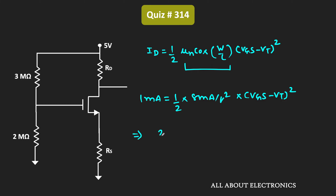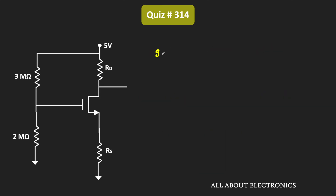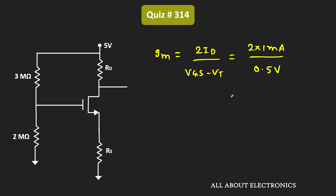Solving, 1/4 = (VGS − VT)², so VGS − VT = 0.5 V. Now we can find the transconductance: gm = 2·ID / (VGS − VT) = 2 × 1 mA / 0.5 V = 4 millisiemens. So the transconductance at the given operating point is 4 mS.